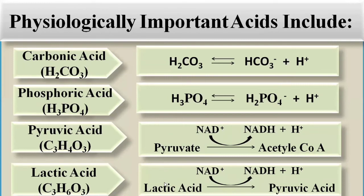These substances are acids because they give and release hydrogen ions — they are hydrogen donors. These physiologically important acids are the sources of hydrogen ions inside the human body. These reactions are reversible, so depending on the needs or functions of the body, the molecules can be converted back to their previous forms.